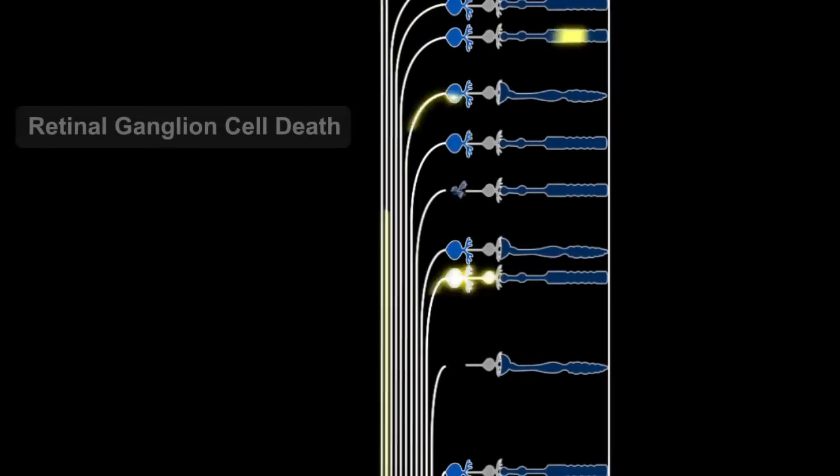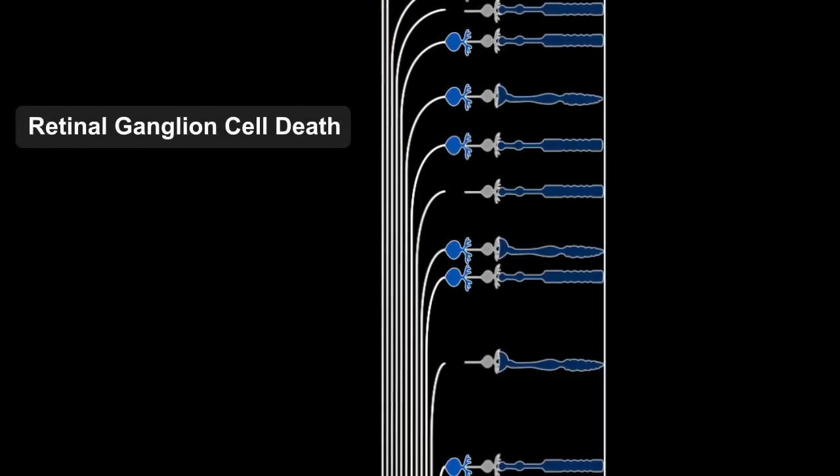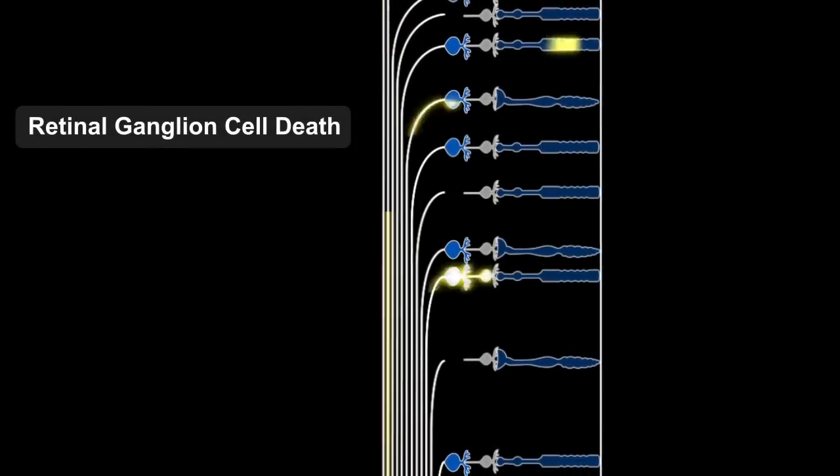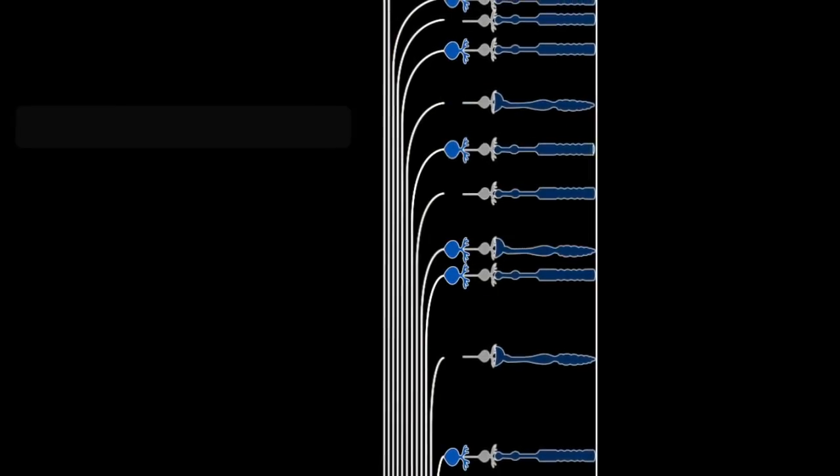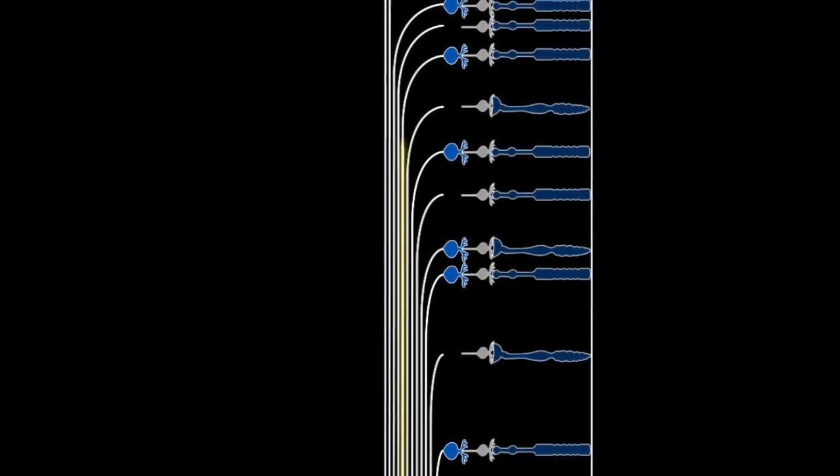Without retinal ganglion cells, the visual signals generated within a retina would not reach your brain. Retinal ganglion cell death is the cause of vision loss in glaucoma, one of the most common eye diseases worldwide.